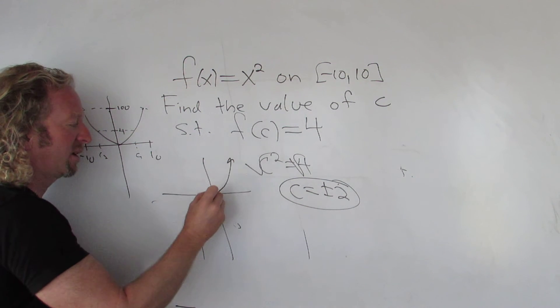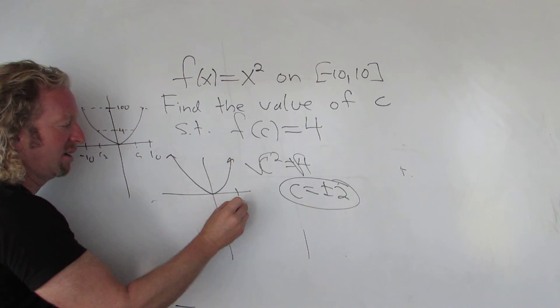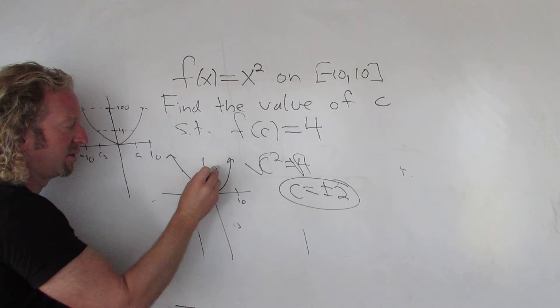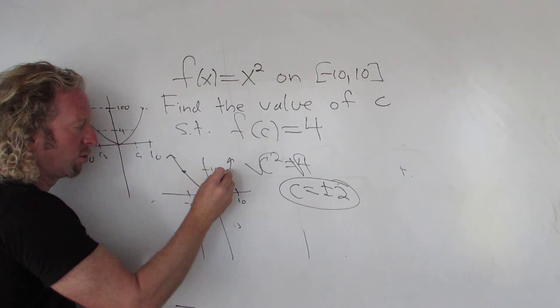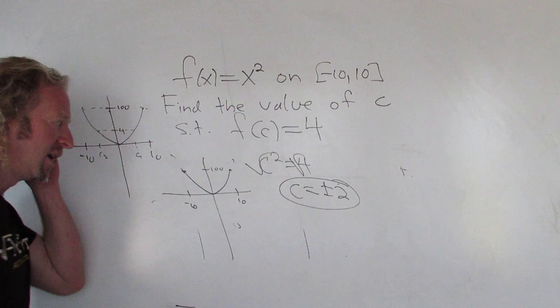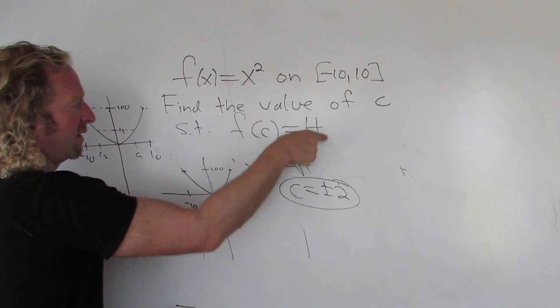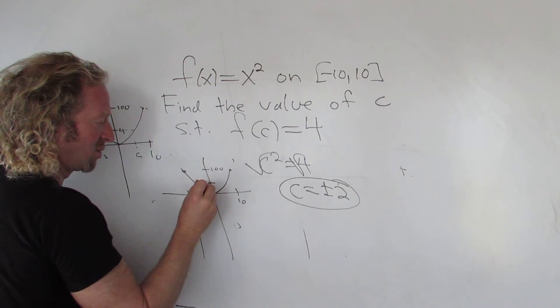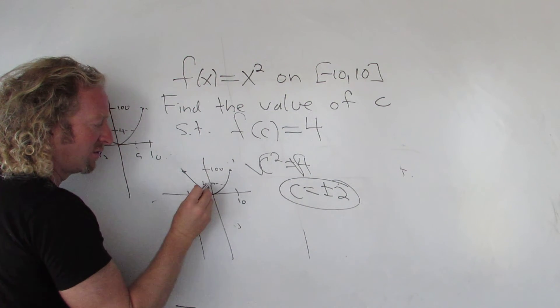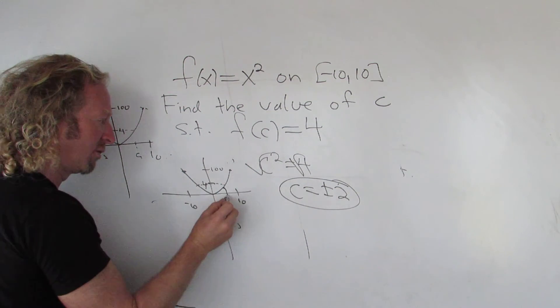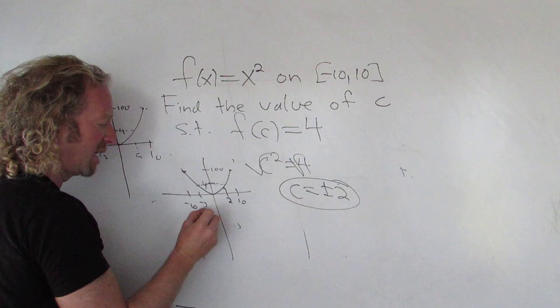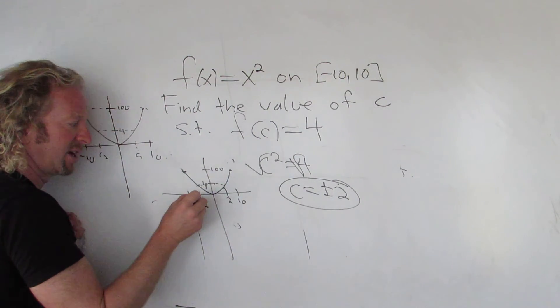Let me do it again over here to make sure you can see it. So here's x². Here's 10, here's -10. That would mean that this is 100. So we're cutting off the picture right there. And the question is, given the number 4 - again, this is not drawn to scale - what are the values of C that go to the number 4? Well, there's two values: 2 and -2. F(2) is 4, F(-2) is 4.